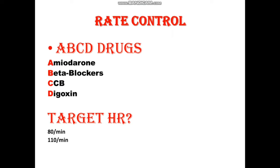What should be the target heart rate whenever we do rate control? If the patient has symptoms of atrial fibrillation like shortness of breath, fatigue, loss of consciousness, or palpitations, then the target should be less than 80 beats per minute. If the patient has ejection fraction less than 40%, the target should also be less than 80 beats per minute. On the other hand, if the patient is asymptomatic and ejection fraction is more than 40%, then the target should be less than 110 beats per minute.